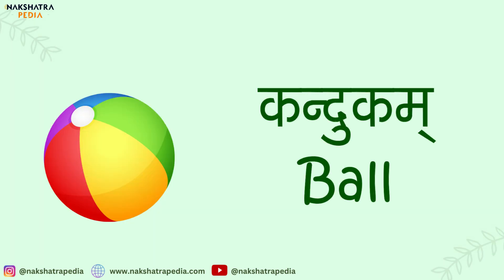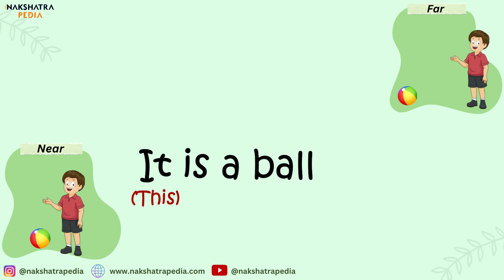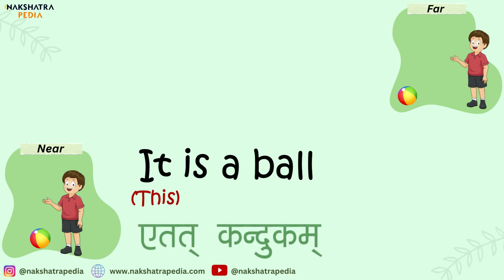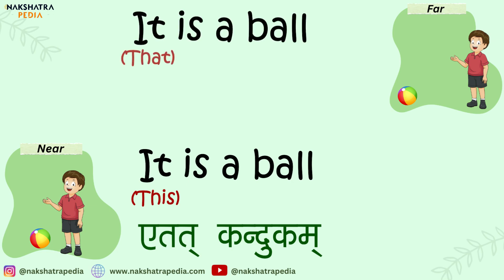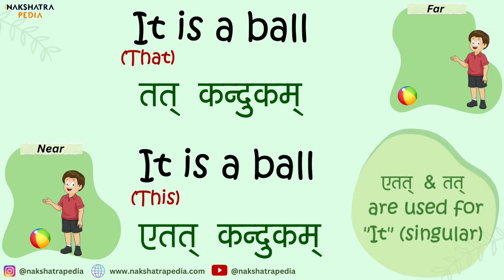For example, we take a ball which is kandukam in Samskritam. If the sentence is 'it is a ball' and the ball is near, then the sentence is etat kandukam. And if the ball is far, it will be tat kandukam. So etat and tat are for speaking 'it', and here kandukam is singular, as are etat and tat.